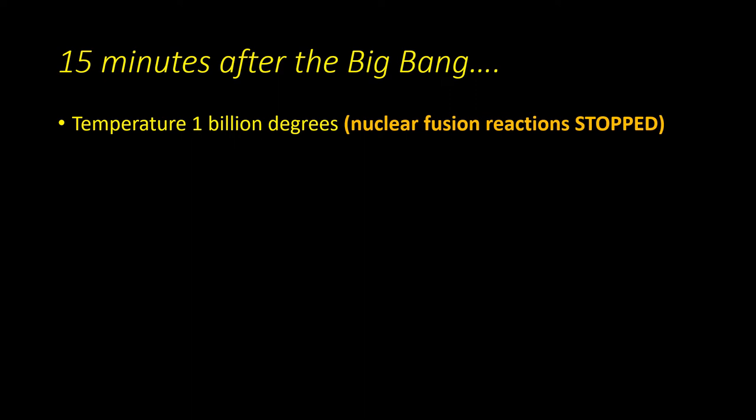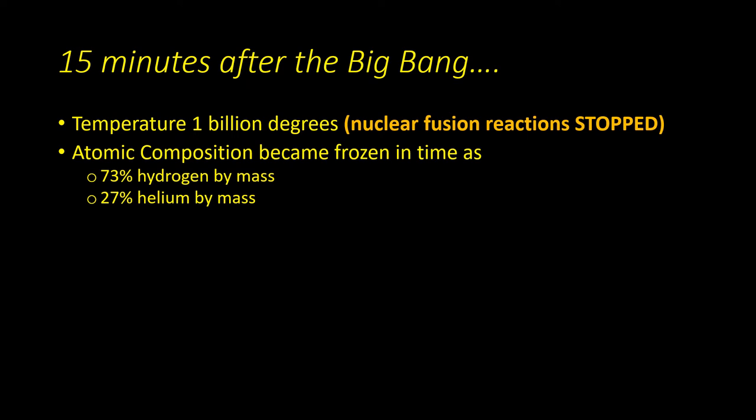When the universe was 15 minutes old, its temperature had dropped to only one billion degrees. At this temperature, nuclear fusion could no longer take place—it was too cold for this to happen. So the composition of the universe was frozen at 73% hydrogen, 27% helium, and a small amount of other elements, mainly lithium.